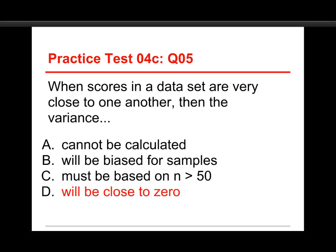The answer to this one is that it will be close to zero. If they're very close to one another, there's not much that separates them, and the average distance from the mean, which is basically what the variance is, or the average square distance from the mean, is going to be close to zero. If they were far apart, it would be a big number.